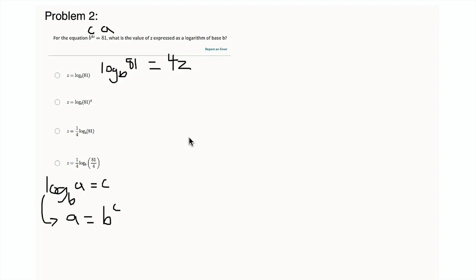Okay, so that is a logarithm of base b, but it looks like the answers, well, definitely we want to find z alone. Oh, we want the value of z expressed. Yeah, so we don't want 4z, we want z. So we need to divide that by 4. So just like normal division, you want to divide everything by 4.